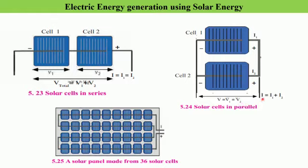As far as the current is concerned, the total current I = I1 + I2, the sum of the currents flowing through cell 1 and cell 2. So, if two solar cells are connected in parallel combination, the potential differences are not added. In summary: in series combination the current is not added, and in parallel combination the potential differences are not added.